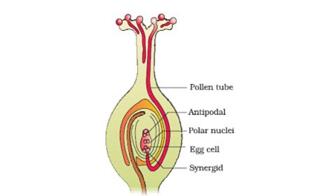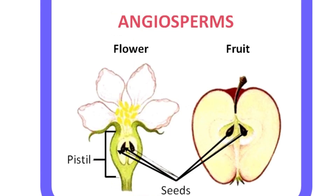Four: seed and fruit development. A) The ovule develops into a seed with the embryo, endosperm, and protective seed coat. B) The ovary matures into a fruit, housing and dispersing the seeds. Five: seed dispersal — fruits and seeds are scattered by wind, animals, or water, allowing for potential germination in new locations.